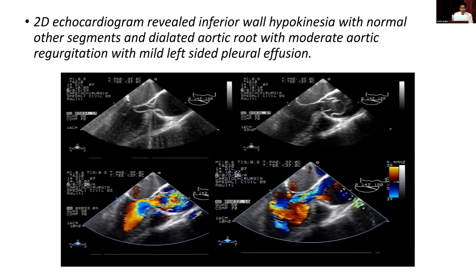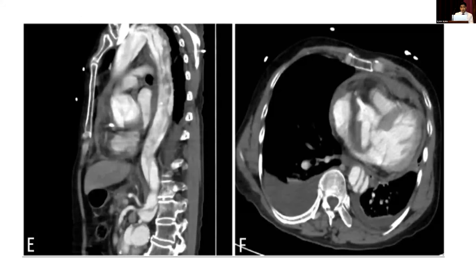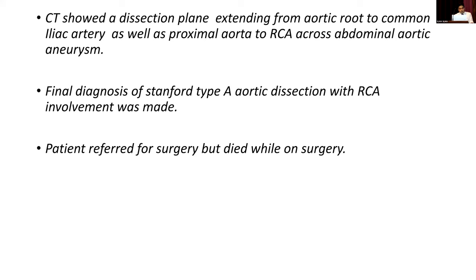The diagnosis was aortic dissection extended to the right coronary artery — mismanaged as inferior STEMI. A chest X-ray showed mediastinal widening and left-sided pleural effusion. An urgent CT aortogram confirmed aortic dissection due to an aortic aneurysm extended to the right coronary artery. The final diagnosis was Stanford Type A aortic dissection with RCA involvement. The patient was urgently referred for surgery but died during the operation.